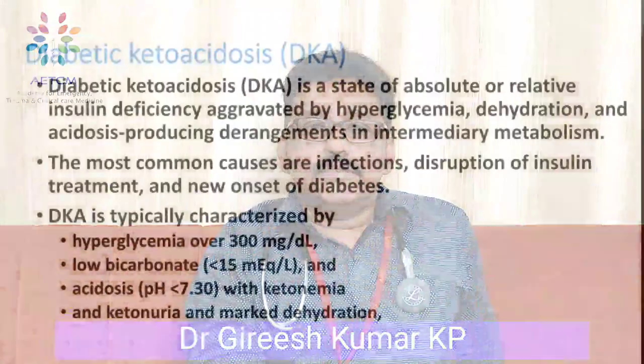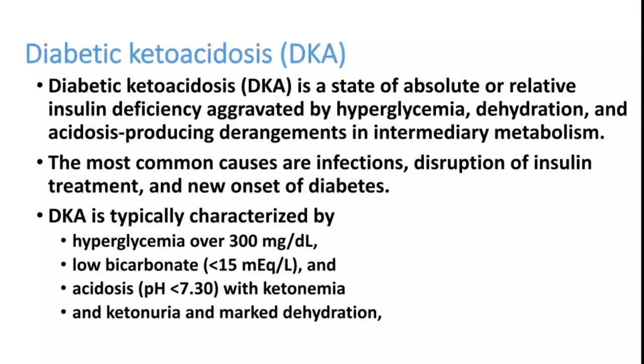Welcome to ATCM, the emergency medicine channel. Today we are discussing diabetic ketoacidosis, one of the major endocrine emergencies. DKA is a state of absolute or relative insulin deficiency aggravated by hyperglycemia, severe dehydration, and acidosis. All these things occur in patients who have insulinopenia, hyperglycemia, dehydration, and acidosis.